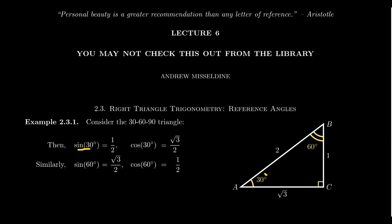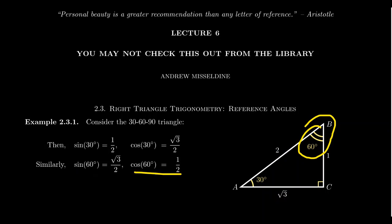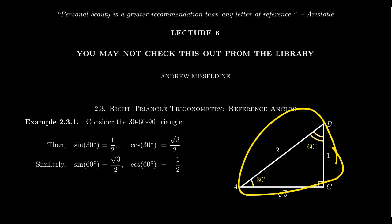Sine of 30 degrees: sine is opposite over hypotenuse, giving 1 over 2. So sine of 30 degrees is 1/2. Cosine of 30 degrees is adjacent over hypotenuse, giving square root of 3 over 2. Similarly, for the 60-degree angle, sine of 60 degrees is opposite over hypotenuse, giving root 3 over 2. And cosine of 60 degrees is adjacent over hypotenuse, giving 1 over 2. So from this triangle we can determine the sine and cosine of both 30 and 60 degrees.